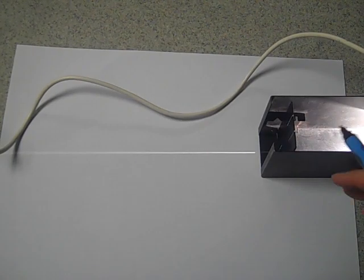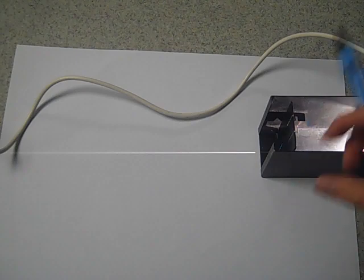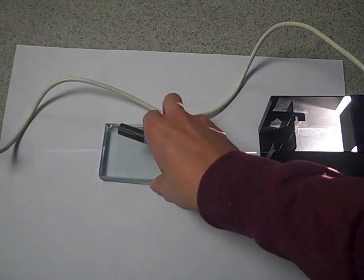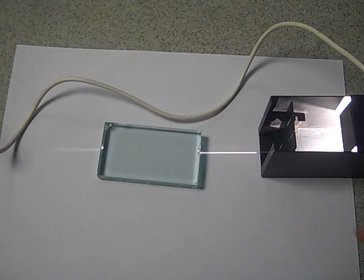This is how you determine refractive index. I've already got my light box set up to my power pack. The first thing you'll need to do is get your block and draw around it.